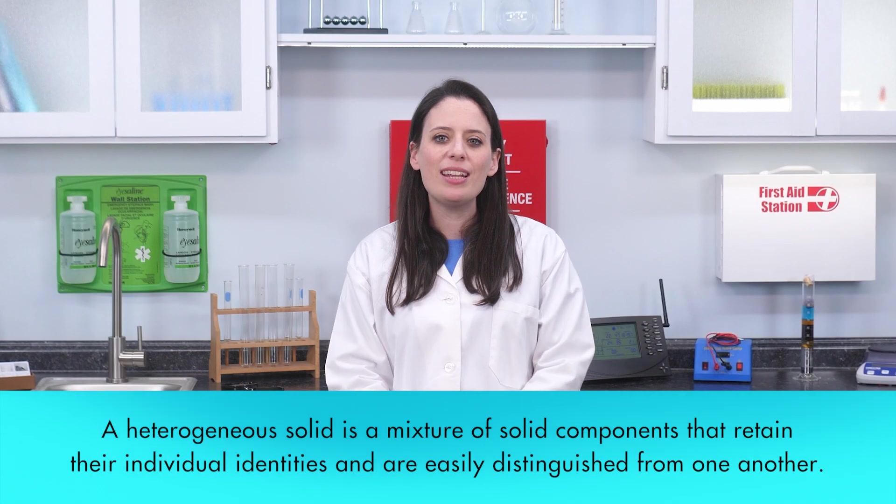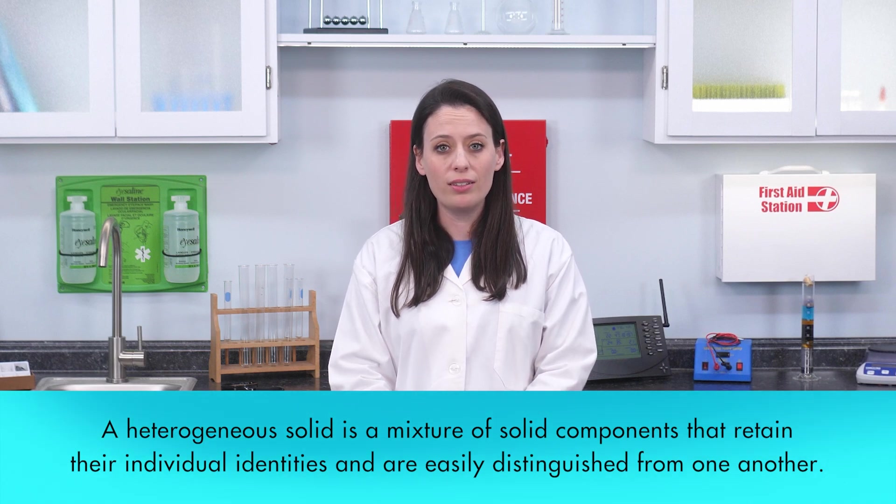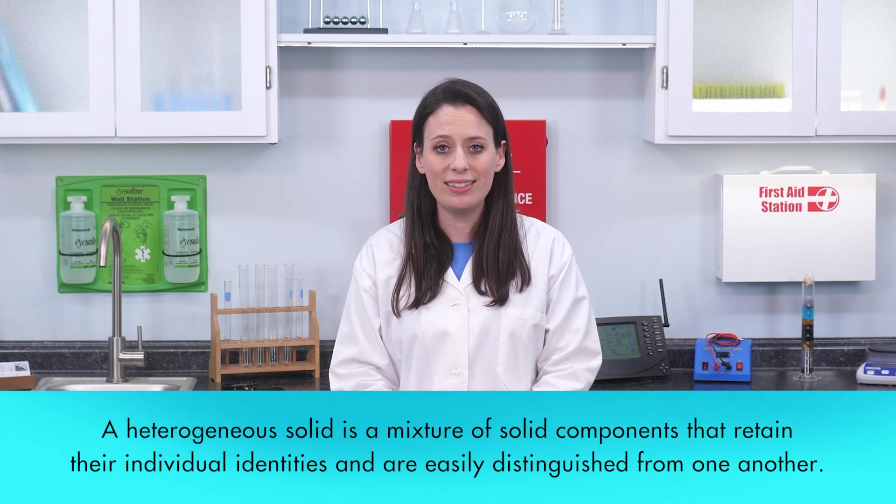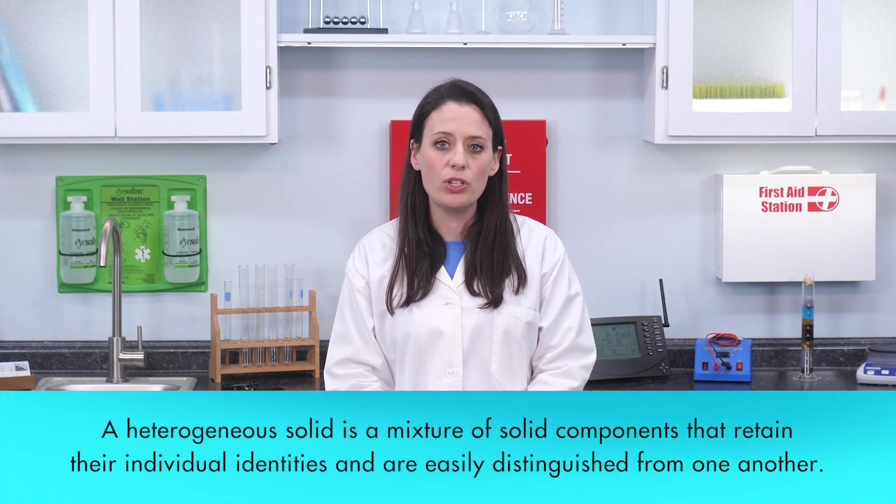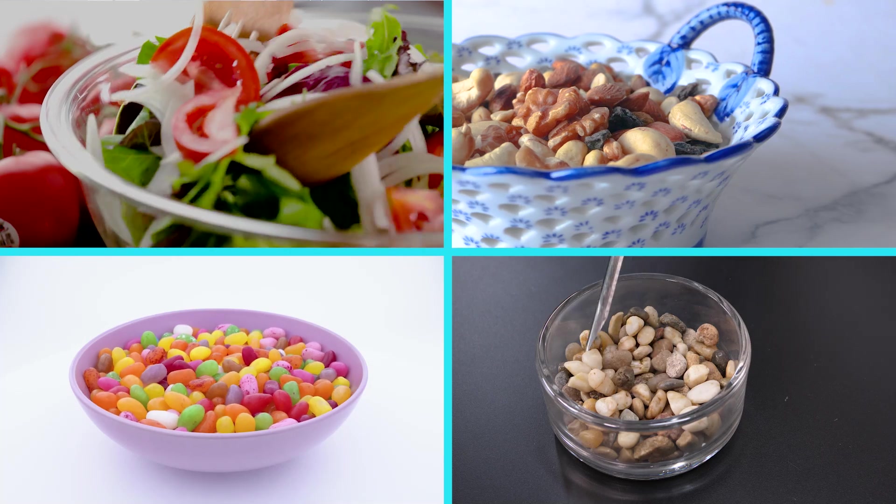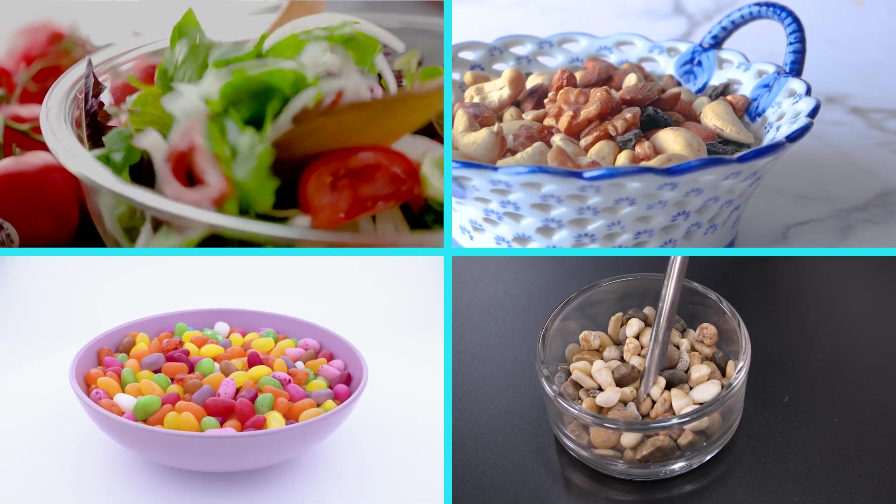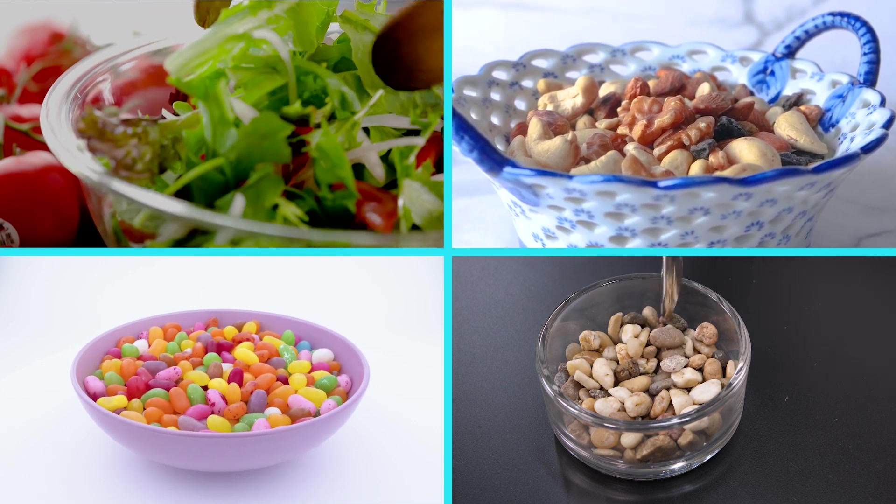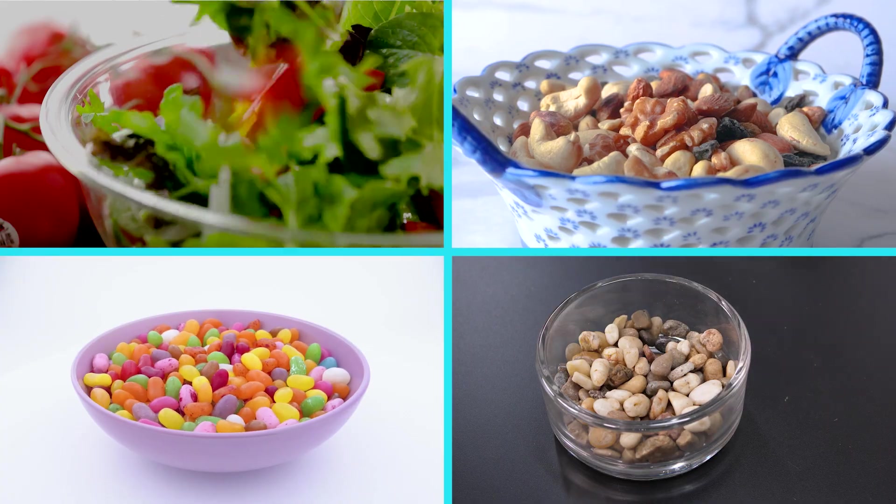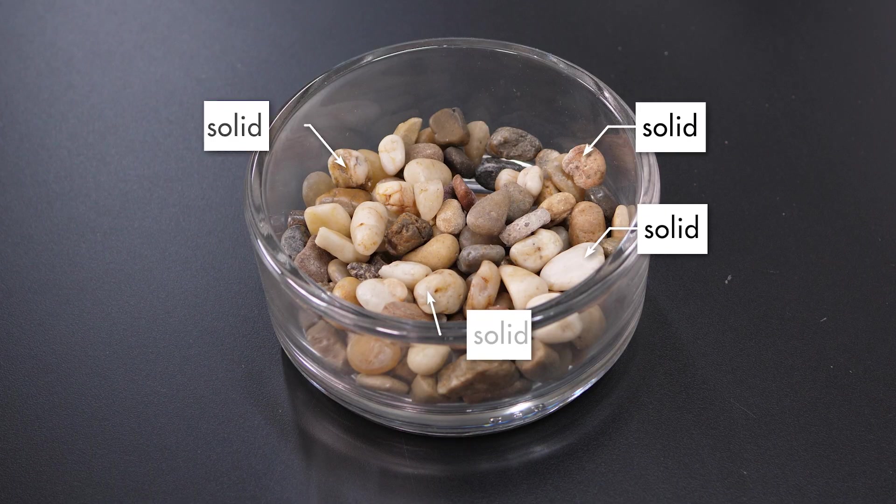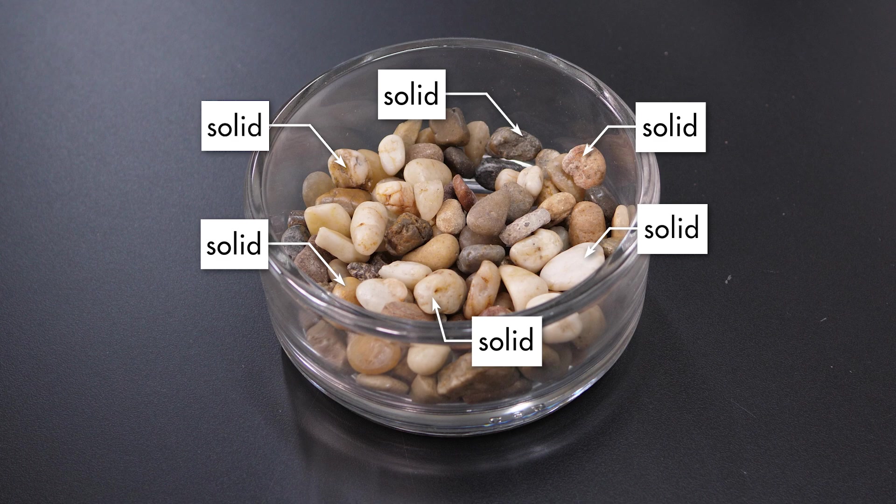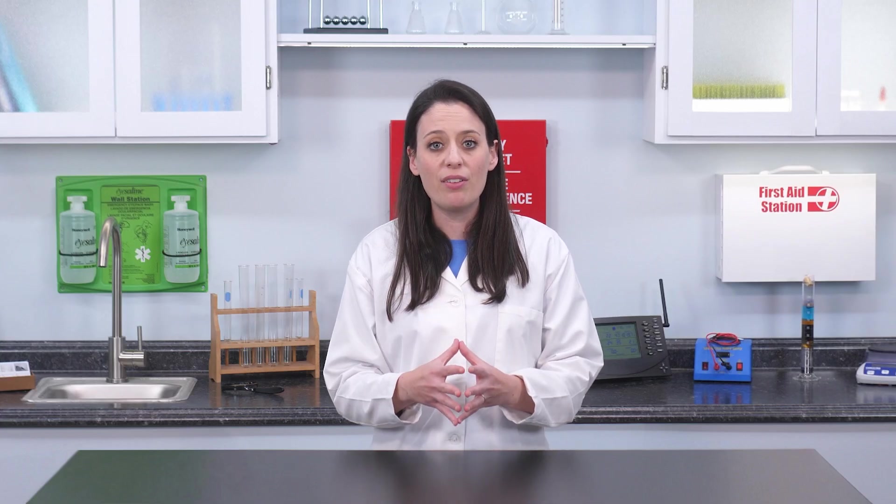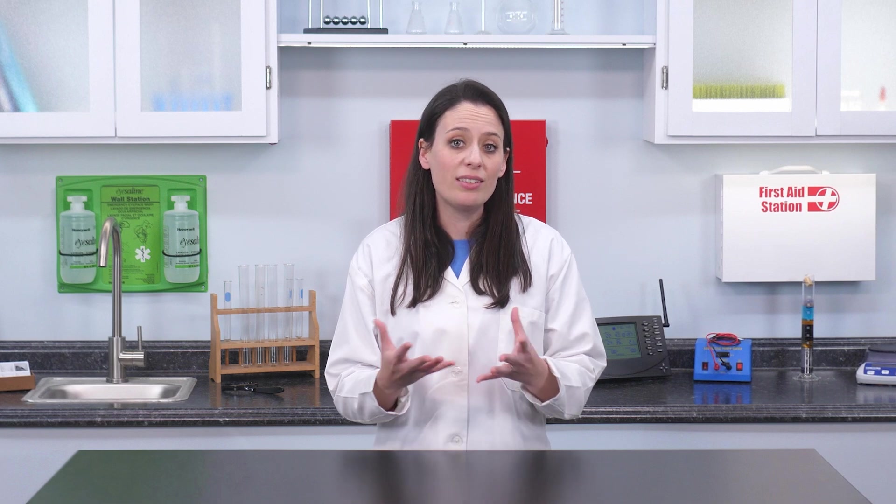A heterogeneous solid is a mixture of solid components that retain their individual identities and are easily distinguished from one another. Some examples of heterogeneous solids are a salad, a bowl of mixed nuts, a bowl of jelly beans, or the gravel we looked at earlier. In a heterogeneous solid, each component of the mixture is solid. The other two types of heterogeneous mixtures, colloids and suspensions, contain at least one component that is not a solid.